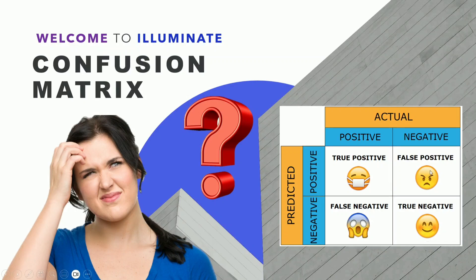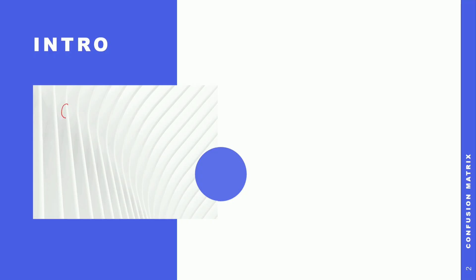Hello, welcome back to Illuminate. We are here for confusion matrix part two. So in part one, we covered confusion matrix and said it deals with classification problems - yes or no, true or false. These kind of classification problems are dealt with using confusion matrix. In this part, we'll be going into two use cases.